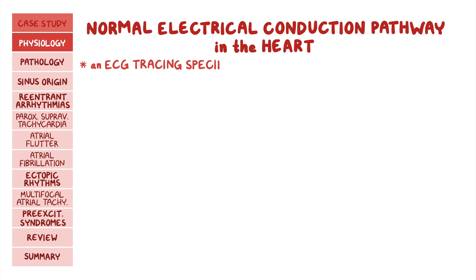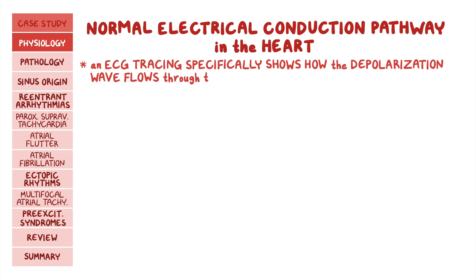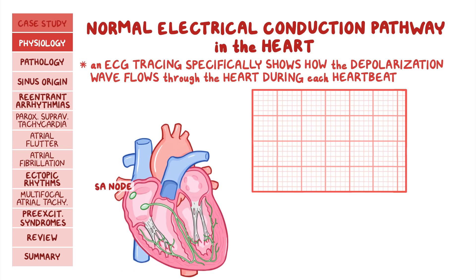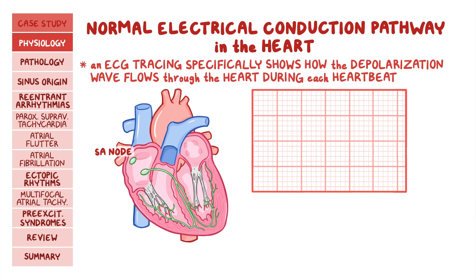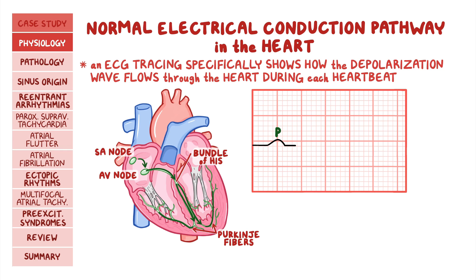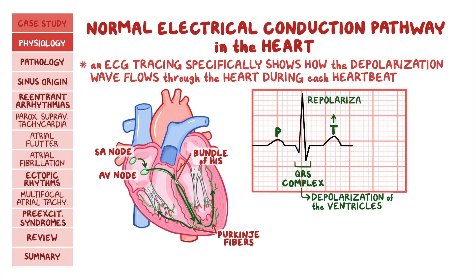An ECG tracing specifically shows how the depolarization wave flows through the heart during each heartbeat. The normal electrical activity of the heart starts in the sinoatrial or SA node and is then conducted through the atrium, creating the P wave on ECG. From the atrium, electrical activity goes to the atrioventricular or AV node, after which it goes through the bundle of His, then the right and left branches of the bundle, and finally through the Purkinje fibers, which deliver the current to the right and left ventricles. On an ECG, this will create the QRS complex, which represents the depolarization of the ventricles, and finally the T wave, which represents the repolarization of the ventricles.